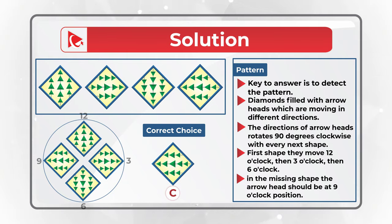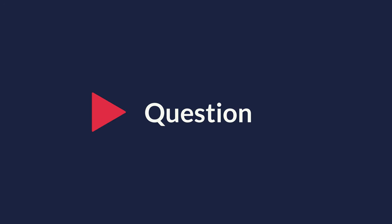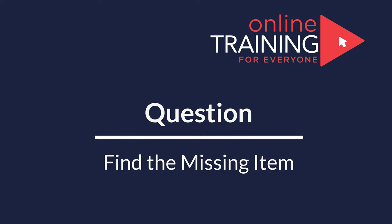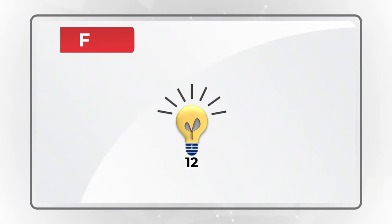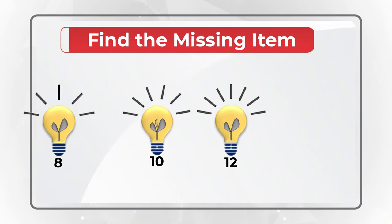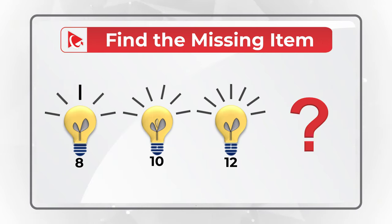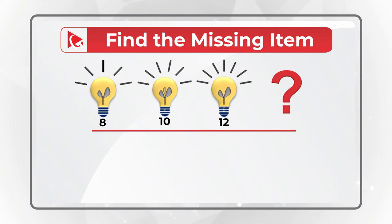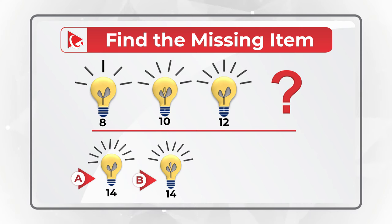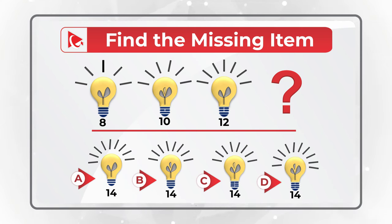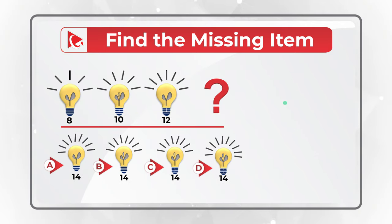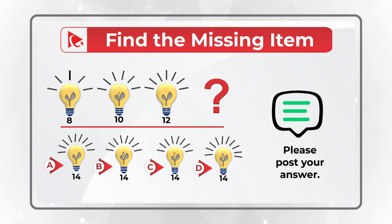I have a surprise for you — a question to test your skills. Please take a close look at the picture and see if you can find the next item in the sequence. You have four choices: A, B, C, and D. Give yourself a few seconds. If you found the answer, please make sure to post it in comments. Good luck!